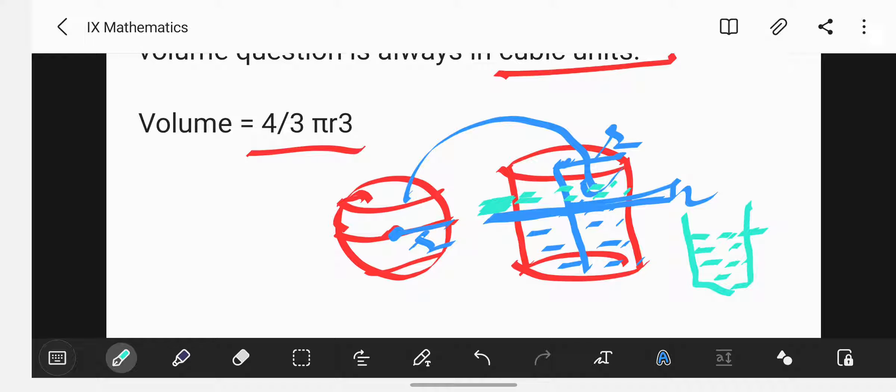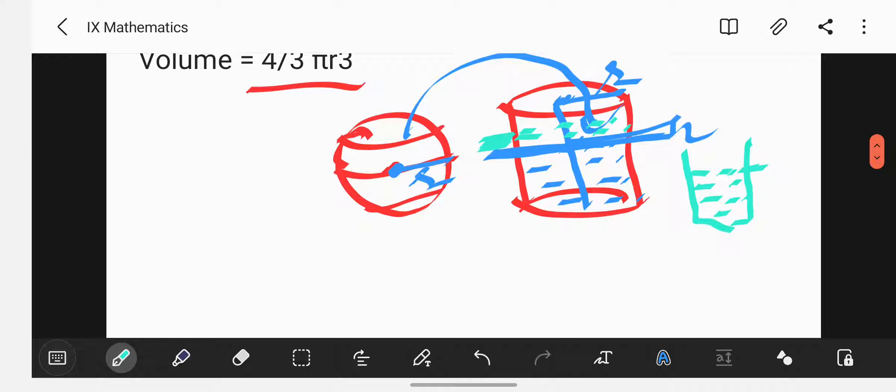Check the measurement. This is a graduated flask where the measurements are already marked. Check the measurements that will be in cubic units. This will give you the volume of the given spherical ball.